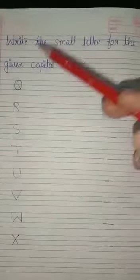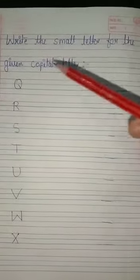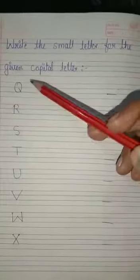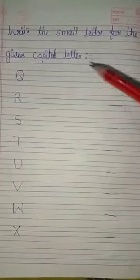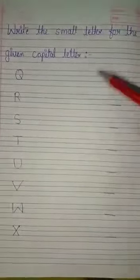So our first activity is write the small letter for the given capital letter. So here I have written some capital letters. Okay, and you have to write here the small letters of that capital letter.